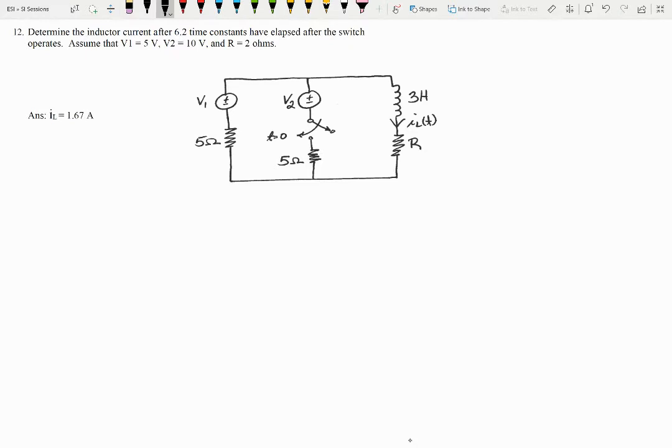We have a circuit where we have two voltage sources, an inductor, this one here, this one here, an inductor, and we have one, two, three resistors.